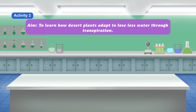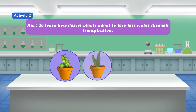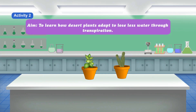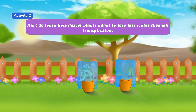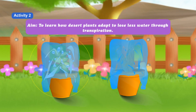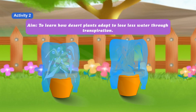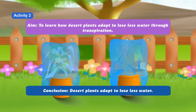Activity: To learn how desert plants adapt to lose less water through transpiration. Materials required: a potted leafy plant and a potted cactus plant, and two polythene bags. Method: Cover both plants with a polythene bag and put them in sunlight for some time. Observe the inner side of the polythene bag. Observation: The amount of water collected on the inner side of both plants is not the same — cactus loses less water through transpiration. Conclusion: Desert plants adapt to lose less water.